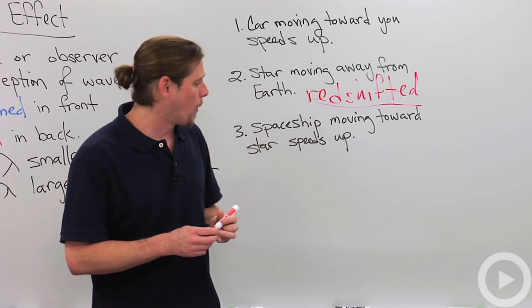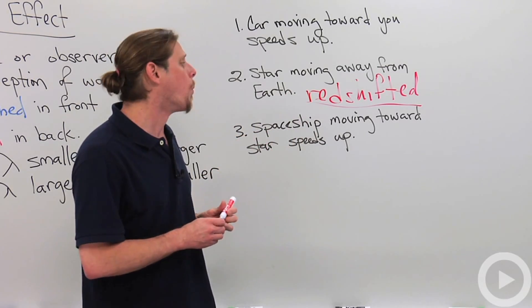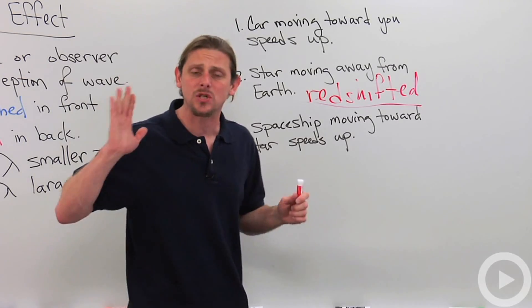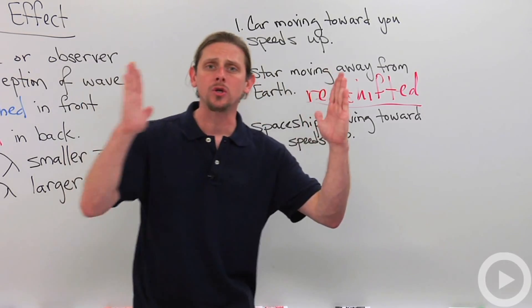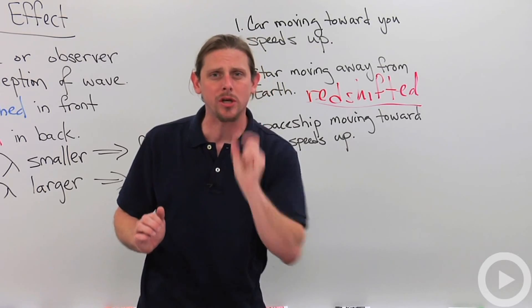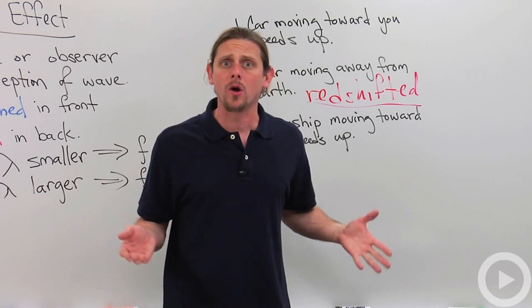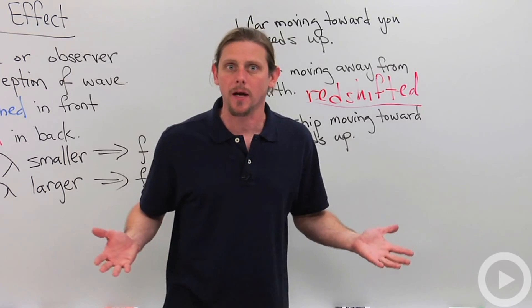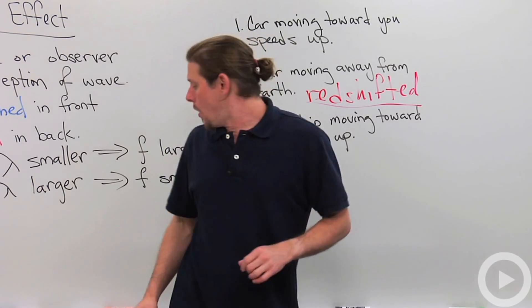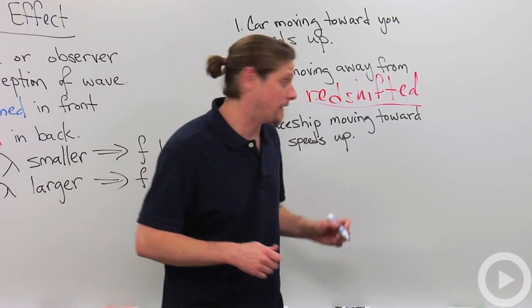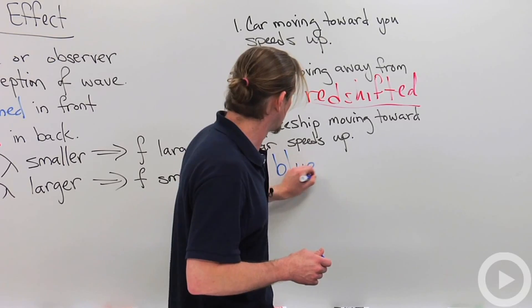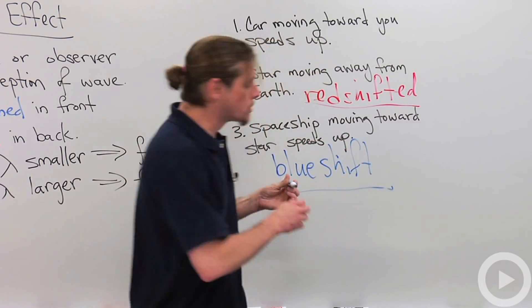Now we've got an example where a spaceship is moving towards a star, and it speeds up. So it's going towards. That means it's squishing the wavelength. It's making it smaller. So, we might want to call this violet shifting, but for some reason we don't. We call it blue shift.